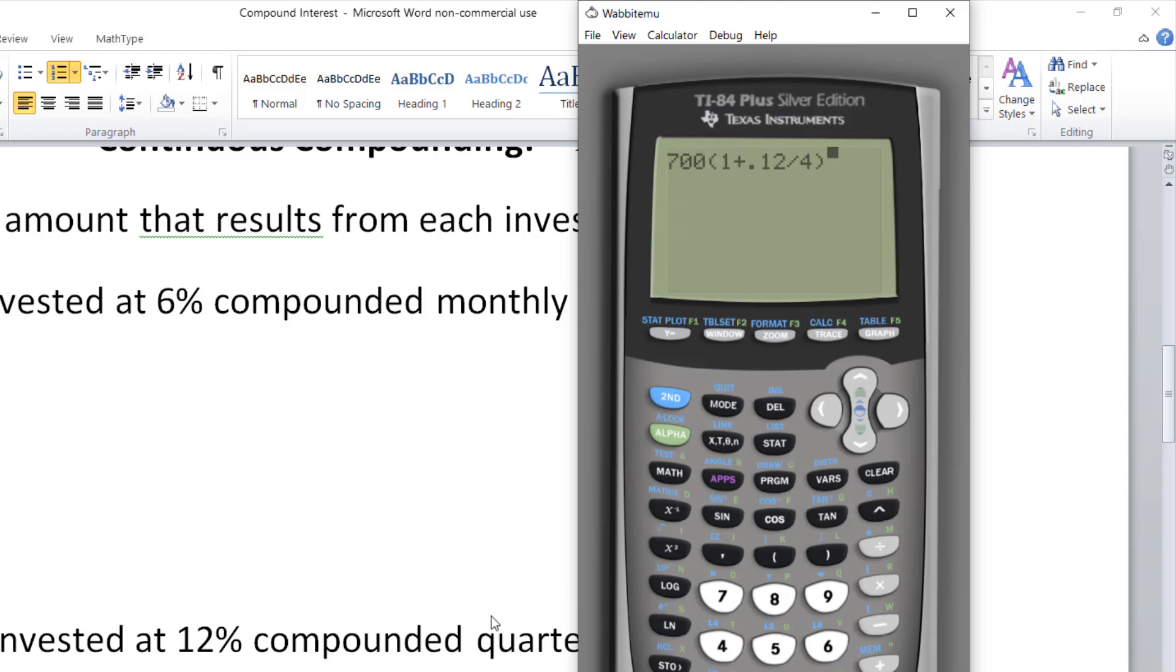Five years and four periods per year, this would be 20. Hit enter.